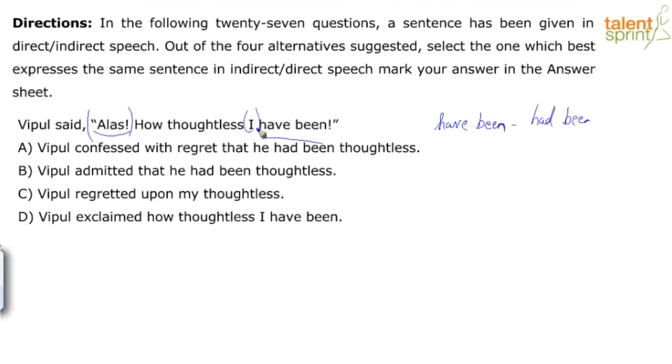Then I have the pronoun I, which changes to he. And alas you can express in different ways. Basically, he is confessing that he feels sorry, that he regrets being thoughtless. So you can change this expression alas to confessed with regret. And the only option that gives that with all the changes we've mentioned - had been, he, confessed with regret - is option A.